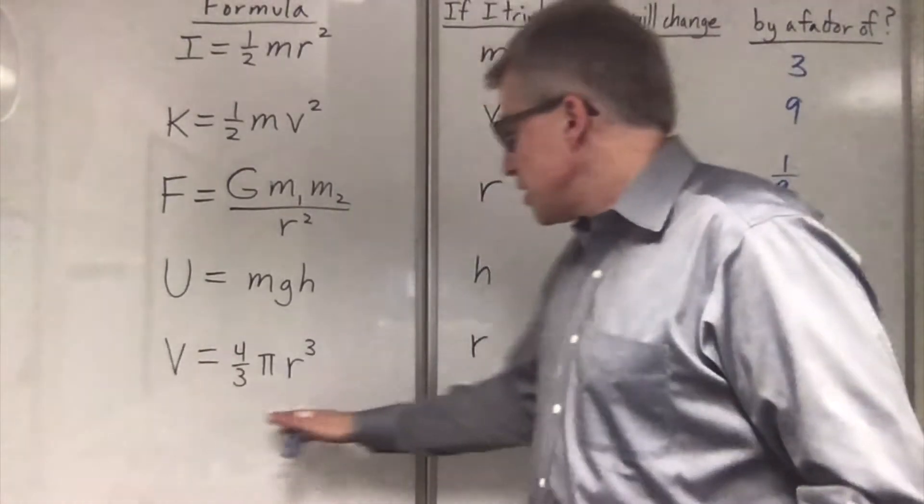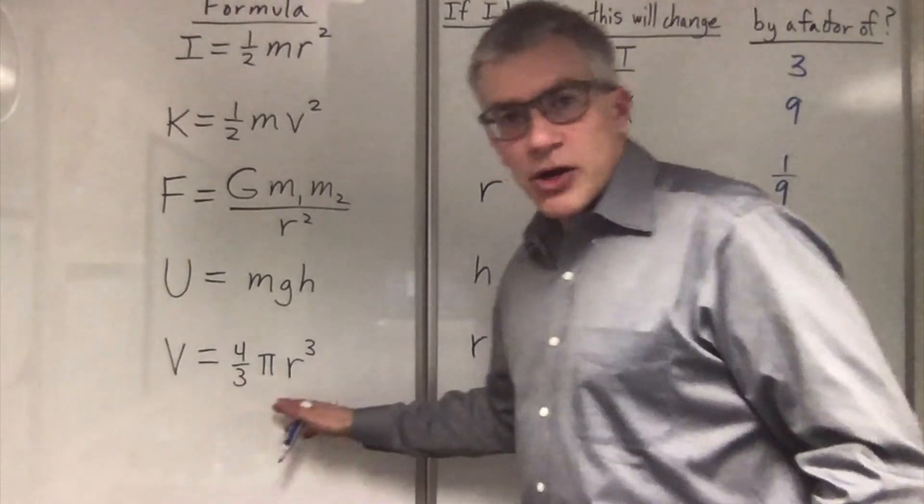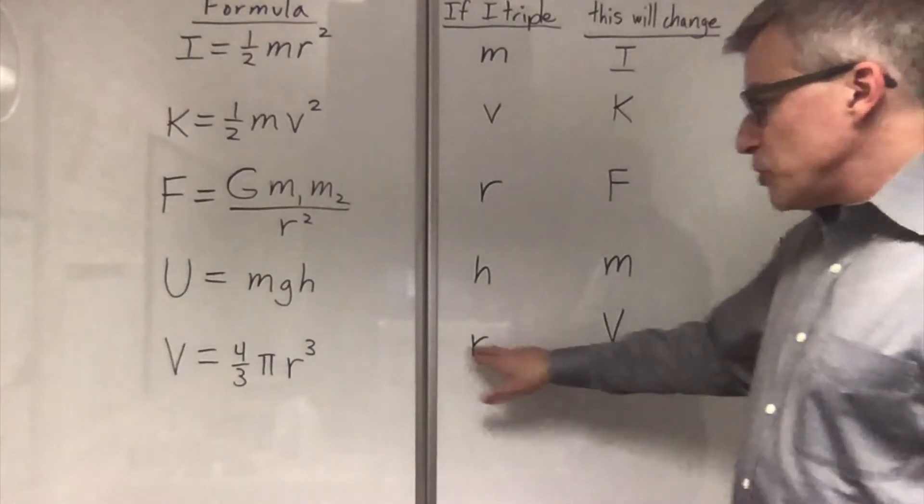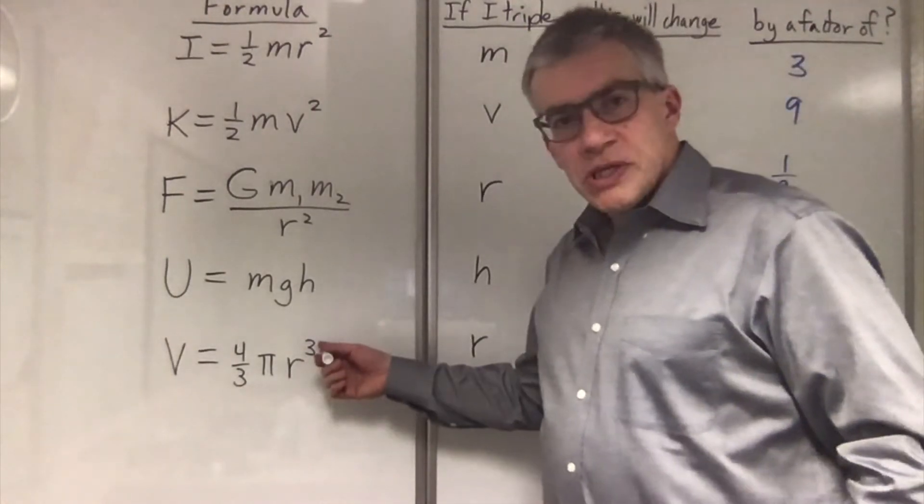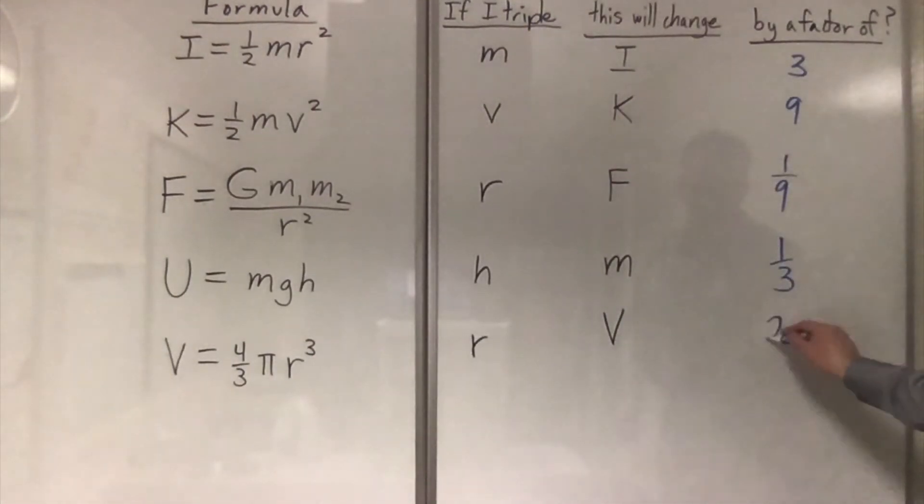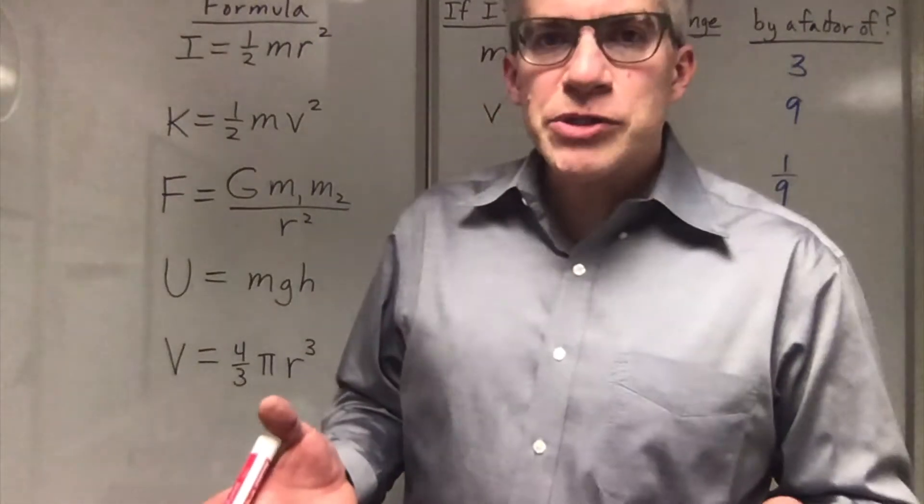And finally, in this case, volume is 4 thirds pi r cubed. If I triple the radius, what happens to the volume? 3 cubed is 27. It's going to be multiplied by 27. So there's five examples. Now, how did I do that so fast?